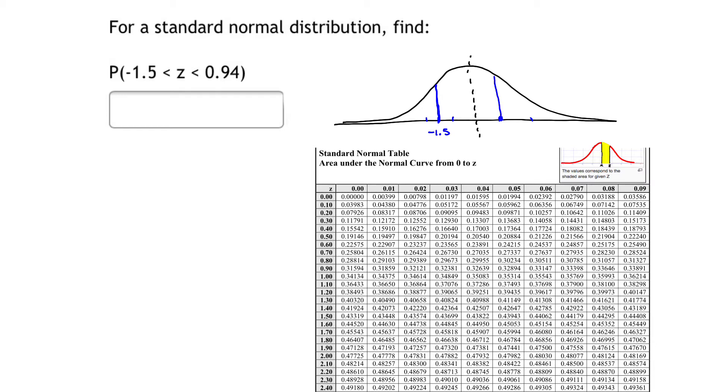We have 0.94 on the right and -1.5 on the left, and we are looking for the area between those two bars. We will use the chart below to help guide our work.